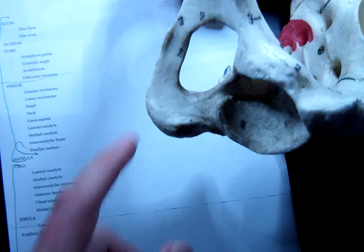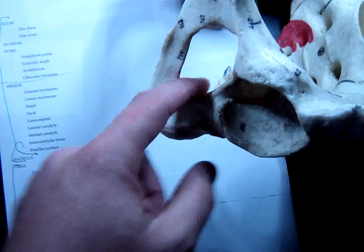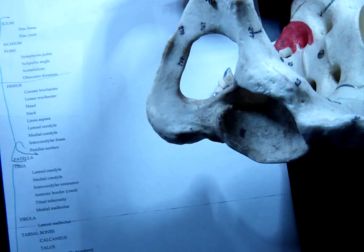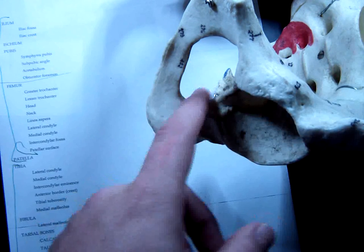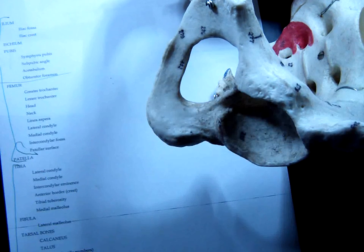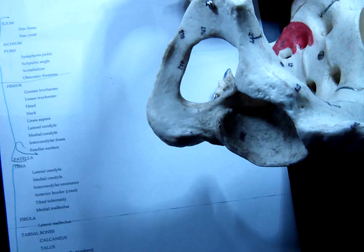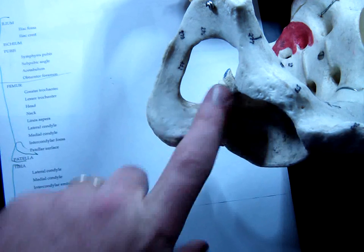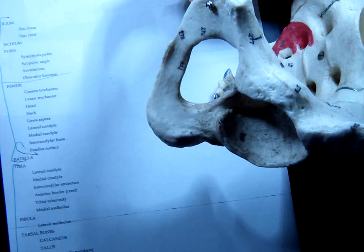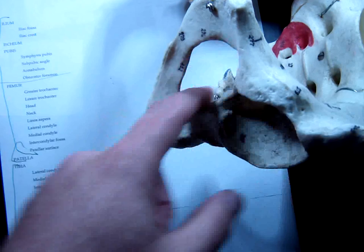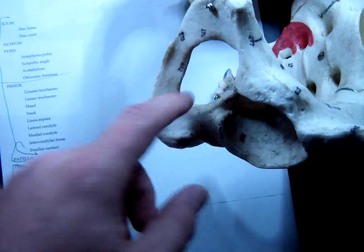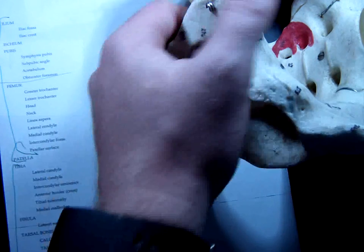And then the only other major marking is this gigantic hole right here called the obturator foramen. Why is it a foramen? It's a hole. Because it's a hole. Precisely correct. That hole, in most cases, if there's any holes in bones, it's going to be blood vessels or lymphatics or nerves that are going through those holes. In this case, there's nothing. It is sealed over with a ligament. There's nothing that travels through there. I'm not 100% sure why it is, but I believe it has to do with decreasing the weight because bones are heavy. To have a hollow space would make it less heavy, I guess.